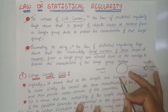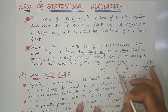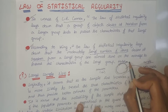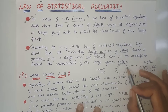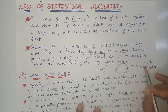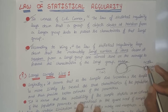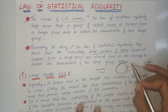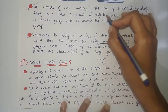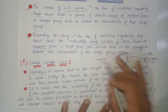We can explain this with an example. Suppose we have a large number of items, which we call the population. From this large number of items we choose a number of objects, which we call the sample. Then the characteristics of this sample must be similar to the characteristics of this population.